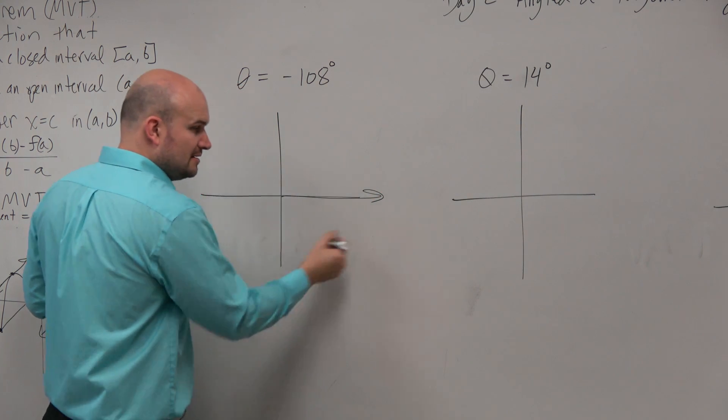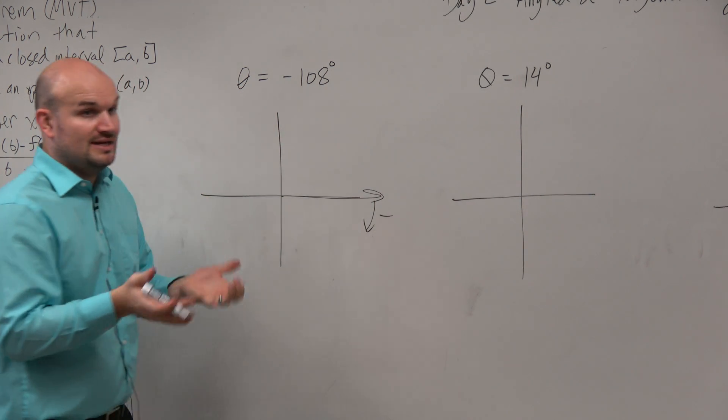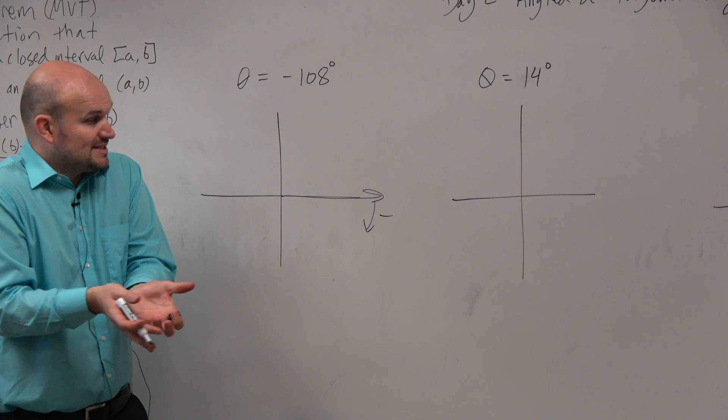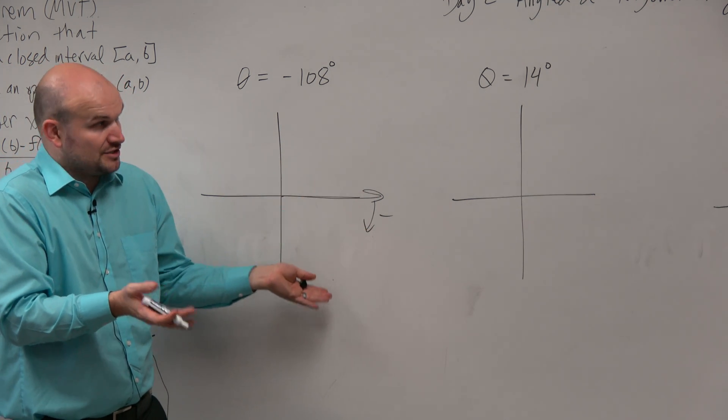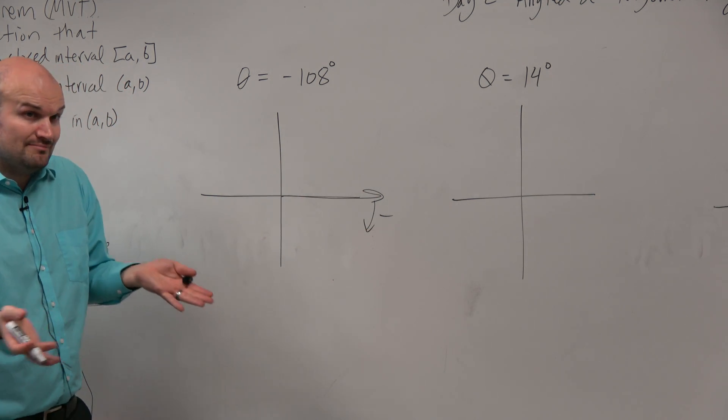We know that here is my initial side, and I'm going to be going down in a negative direction. The measurement's going to remain the same, but we're going down the negative direction. Now, let's go with what measurements we know.